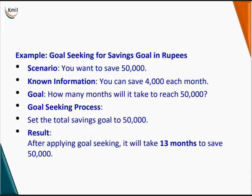Let us consider an example of goal seeking for saving, where the goal is to save money. Say you want to save $50,000 and you can save $4,000 each month. The goal is to find how many months it will take to reach $50,000. The goal seeking process sets the total saving goal to $50,000, and after applying goal seeking, it determines that 13 months are required to save $50,000.